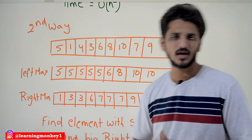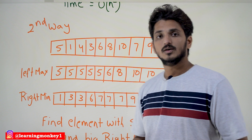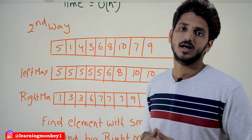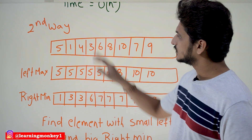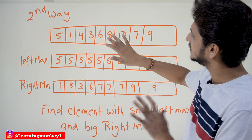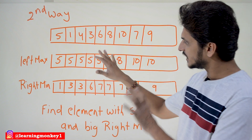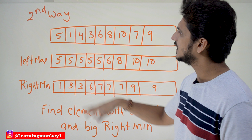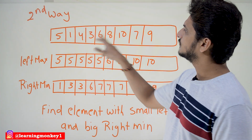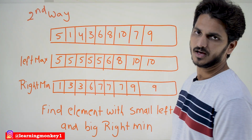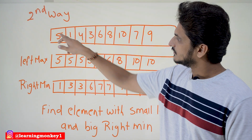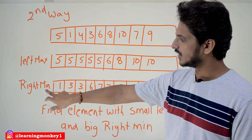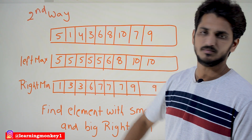Coming to the second way: we have to maintain a time complexity of O(n). For the array 5, 1, 4, 3, 6, 8, 10, 7, 9, we have to identify the left max and we have to identify the right min.